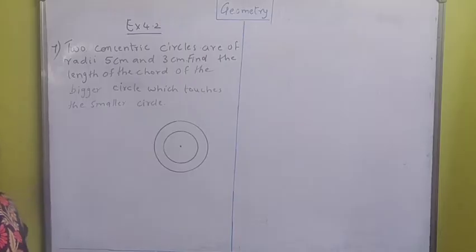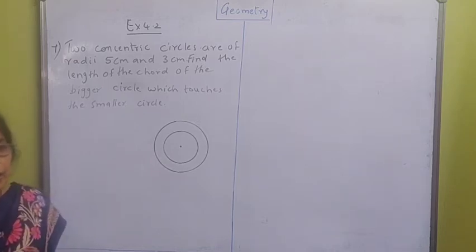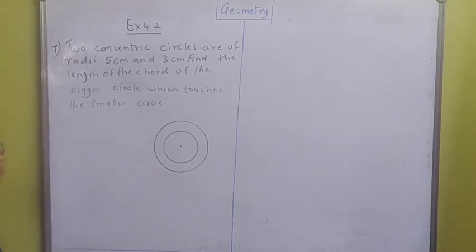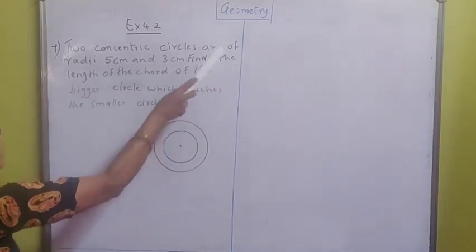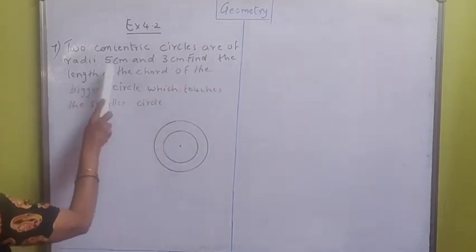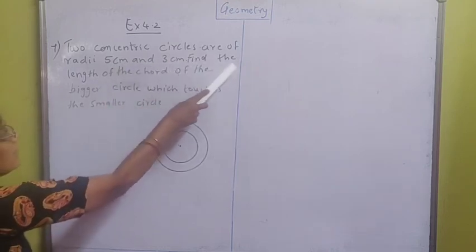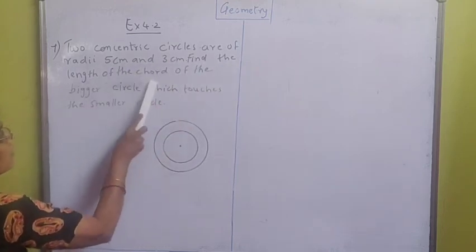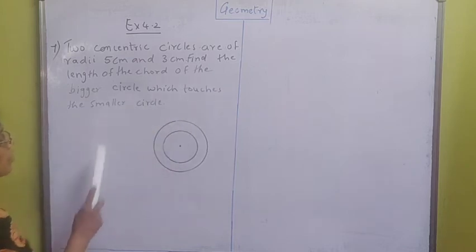Good afternoon students. Yesterday we saw in exercise 4.2, six sums we solved. Today we are going to see the 7th sum. What does the 7th sum say: two concentric circles are of radii 5 cm and 3 cm. Find the length of the chord of the bigger circle which touches the smaller circle.